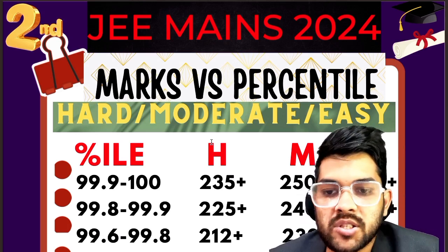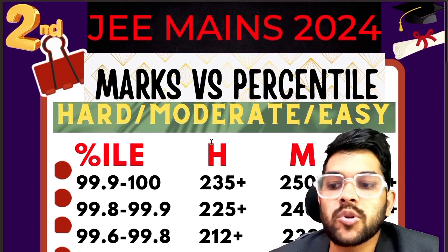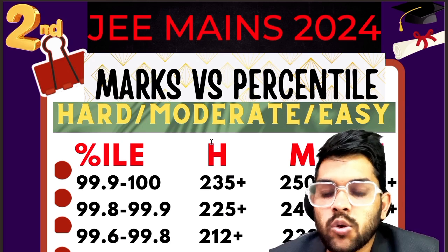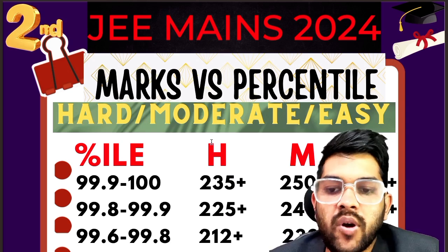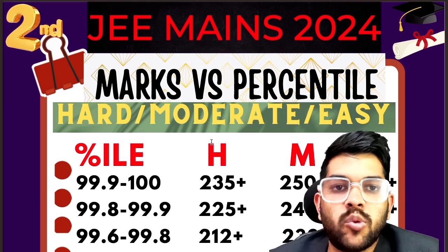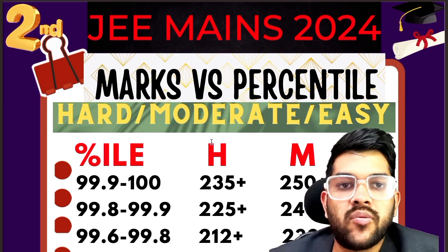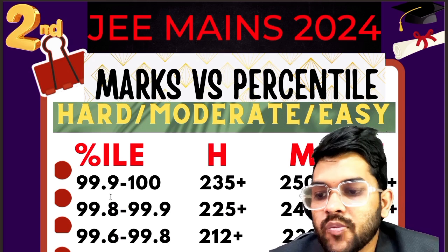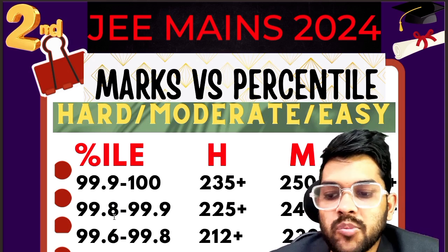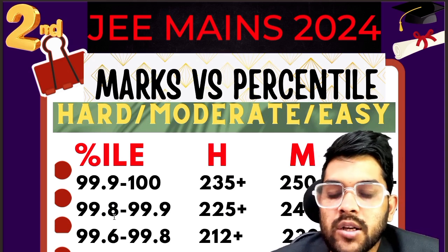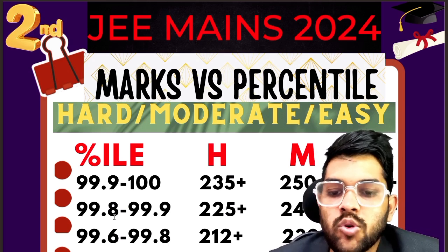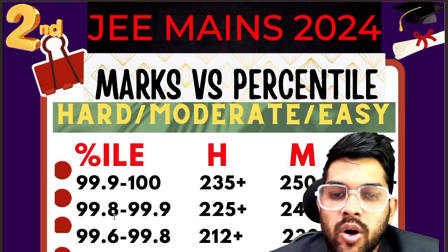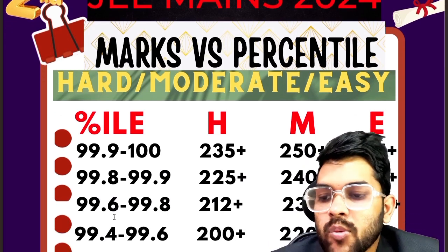For 99.9 to 100 percentile, 235 marks is required for a hard paper, 250 for moderate, and 265 for easy. For 99.8 or more, the marks required are 225, 240, and 255 for hard, moderate, and easy paper respectively.